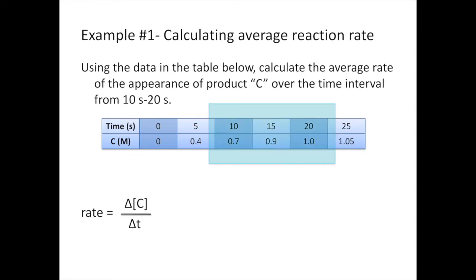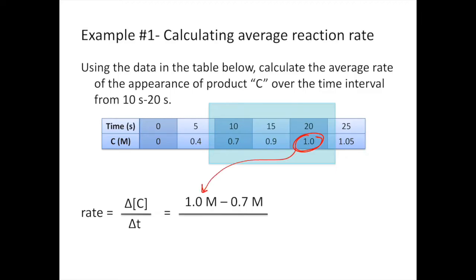This is the section of the graph we're focusing on because we're calculating the average rate from 10 to 20 seconds. We're going to call 20 seconds our final time and 10 seconds our initial time, which means our final concentration of C is going to be 1 molar.